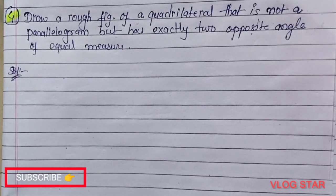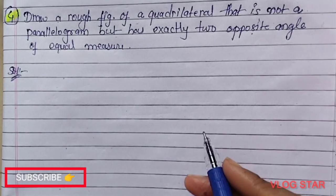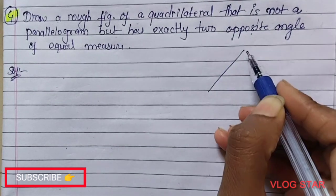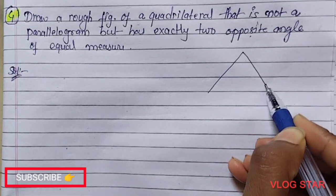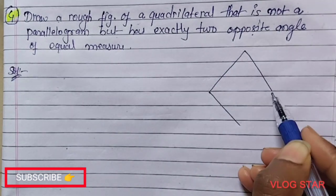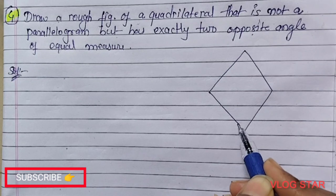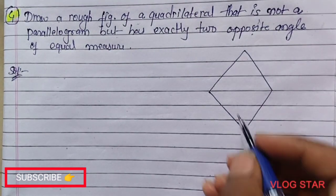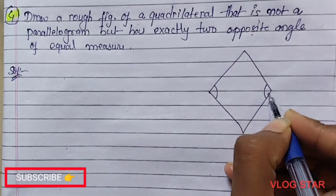So if I draw here a figure of a kite, you can see here these two angles are equal in a kite. These two angles are equal.